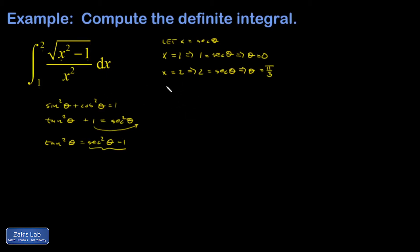And I need to find the transformation of dx. I think I'll go ahead and do that up here right next to x. So dx is secant theta tangent theta d theta.